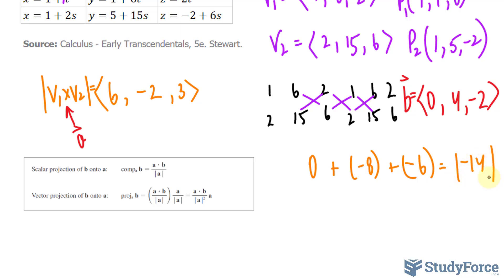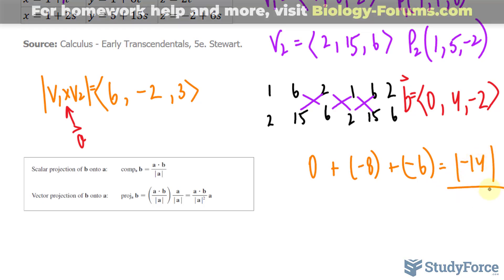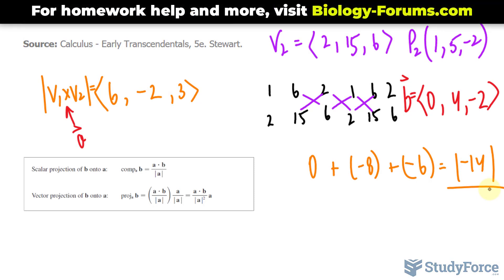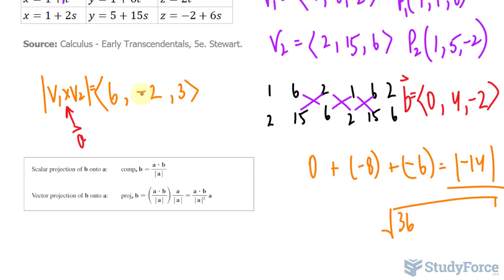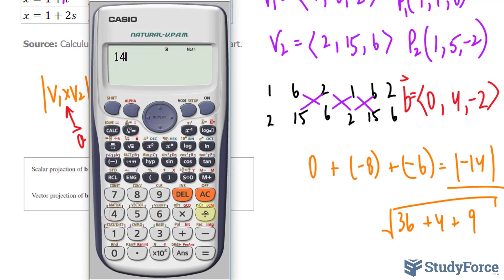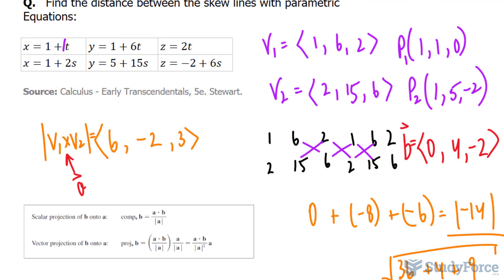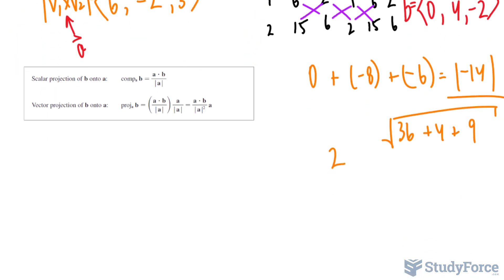And we'll take the absolute of this divided by the magnitude of A, which can be found using the distance formula. So we have 36. 6 to the power of 2 is 36. Negative 2 to the power of 2 is 4. And 3 to the power of 2 is 9. So the absolute of negative 14 divided by the denominator. Let's use our calculator. 14 divided by the square root of 36 plus 4 plus 9. And that gives us 2. So the distance between this line and this line is 2 units apart.